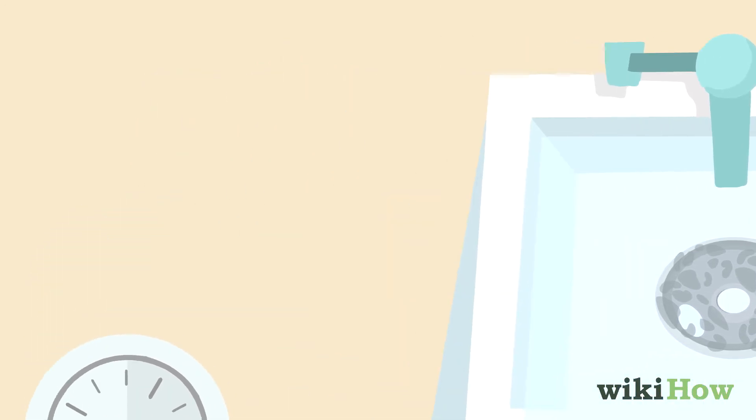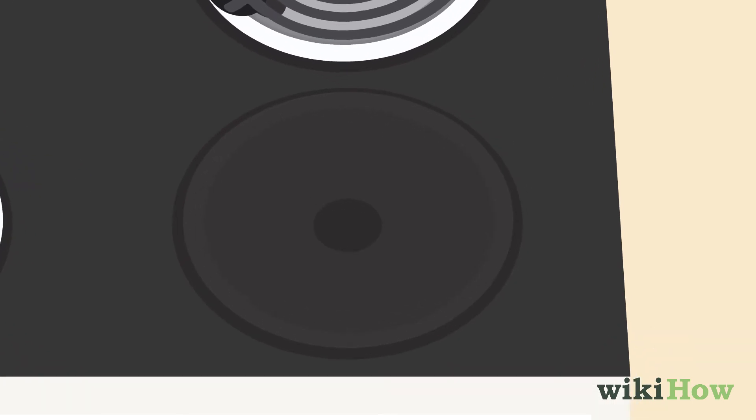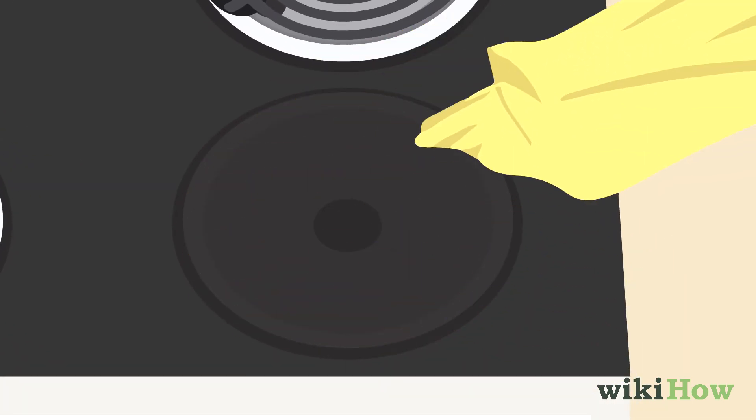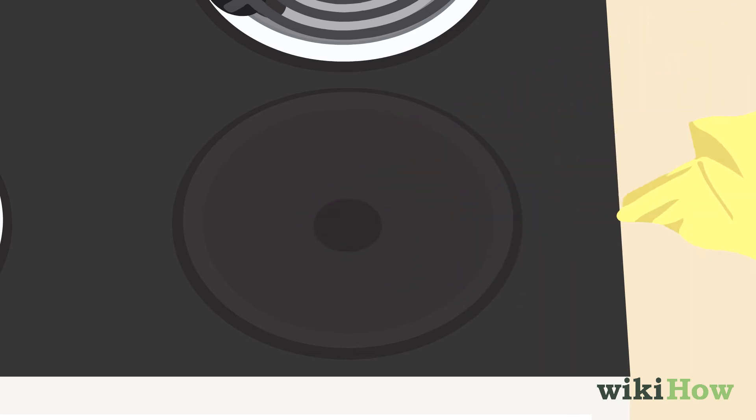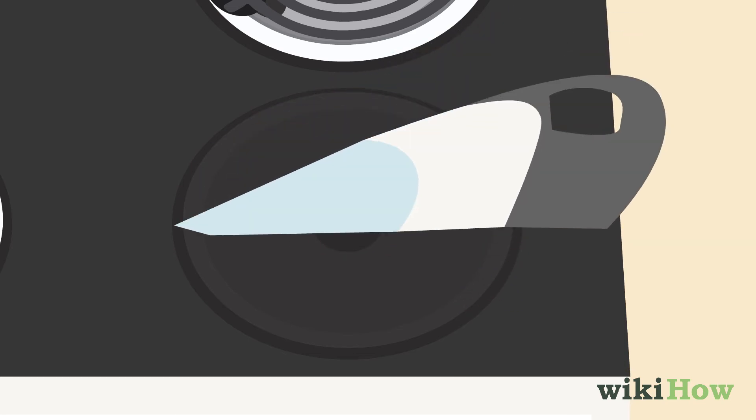Once you've cleaned those, lift the front of your electric stove up and wipe down the inside with a damp cloth to remove any pieces of food. You can also use a vacuum to suck up loose crumbs.